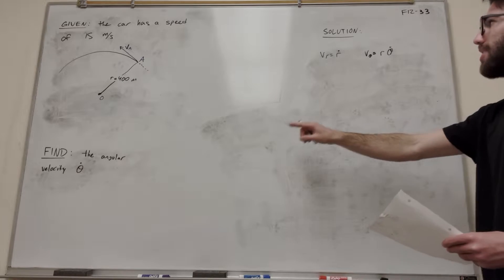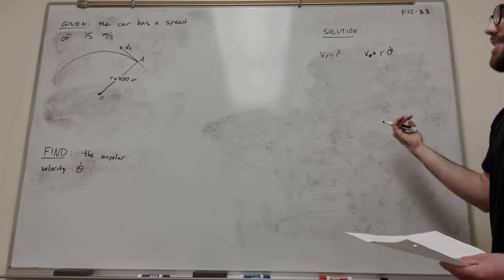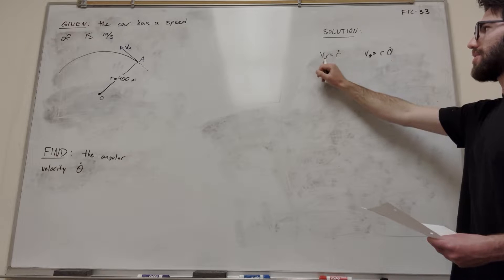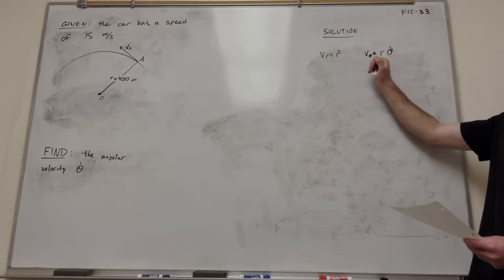We're trying to find the angular velocity, and this is the radial component of the velocity. So our velocity can basically be broken up into two parts: the transverse component and the radial component. The reason we need this is because theta dot is part of the radial component of this velocity here.